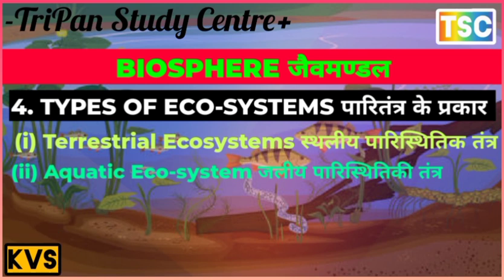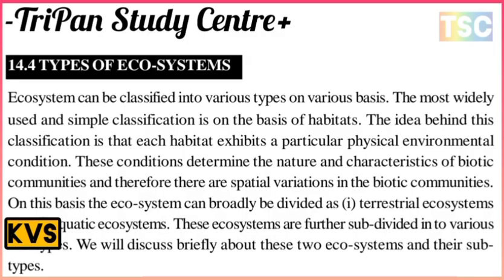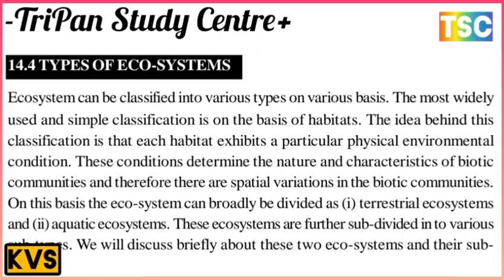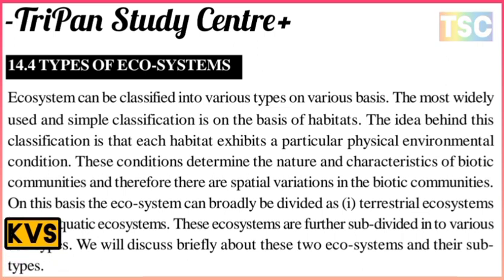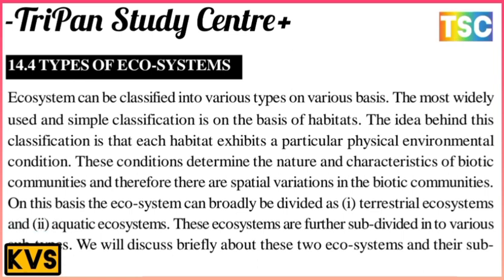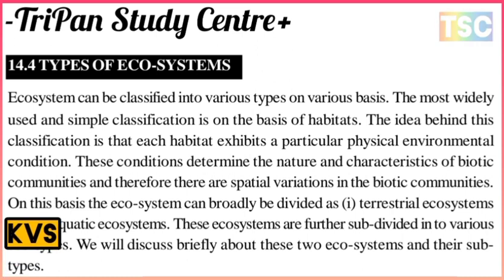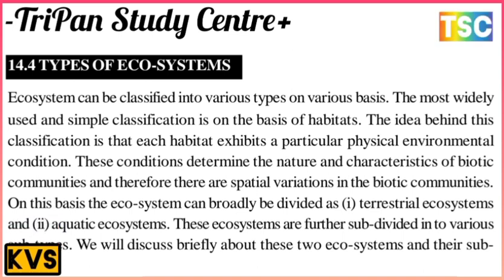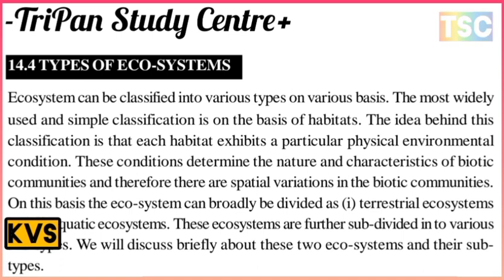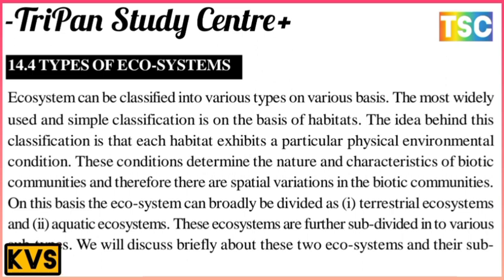The next important topic is the types of ecosystems. Ecosystems can be classified on the basis of habitats — the most widely used classification. Each habitat exhibits a particular physical environmental condition that determines the nature and characteristics of the biotic communities. On this basis, ecosystems can broadly be divided into terrestrial ecosystems and aquatic ecosystems, which are further subdivided into various subtypes.